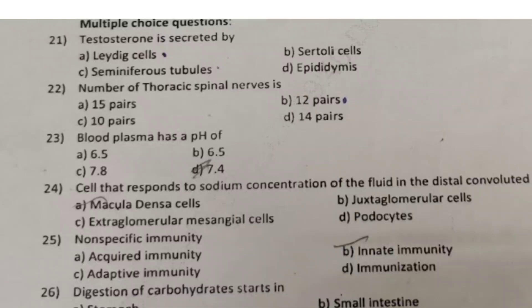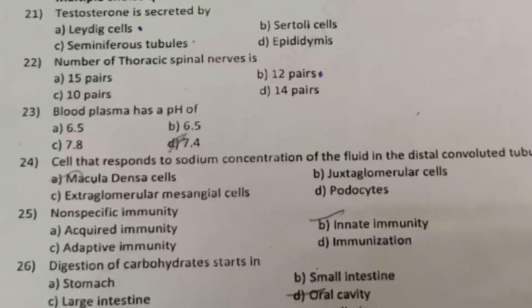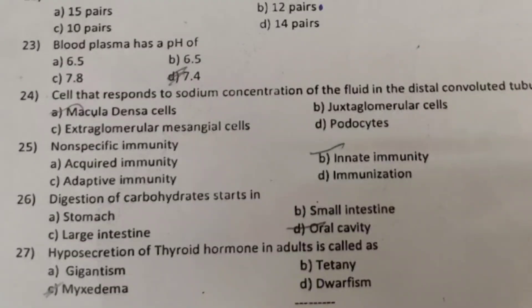Question 23: Blood plasma has a pH of: A. 6.5, B. 6.5, C. 7.8, D. 7.4. Question 24: Cells that respond to sodium concentration of the fluid in the distal convoluted tubule are: A. macula densa cells, B. juxtaglomerular cells, C. extraglomerular mesangial cells, D. podocytes.